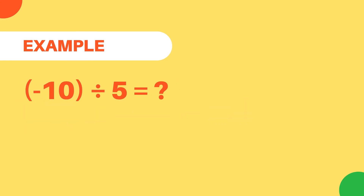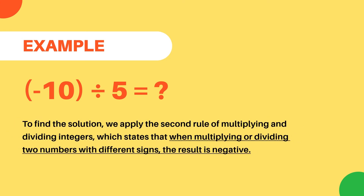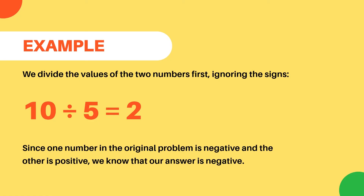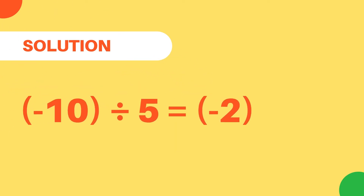Now let's look at an example that applies the second rule. Negative 10 divided by positive 5 equals? To find the solution, we apply the second rule: when multiplying or dividing two numbers with different signs, the result is negative. We divide the values of the two numbers first, ignoring the signs, so we calculate 10 divided by 5 equals 2. Since one number is negative and the other is positive, our answer is going to be negative. So the final solution is negative 10 divided by positive 5 equals negative 2.